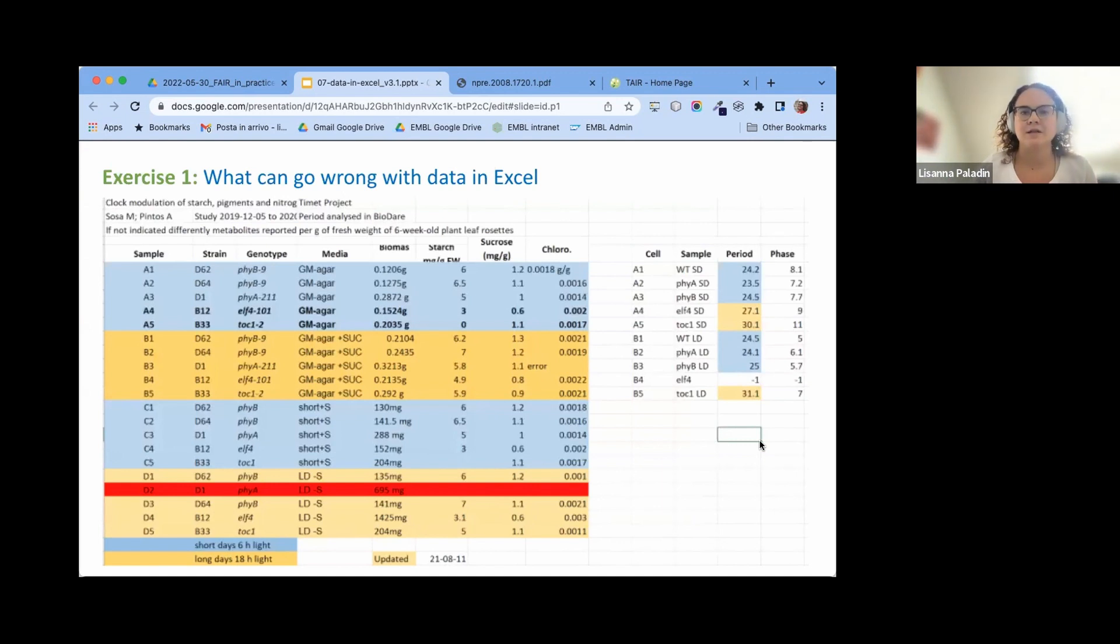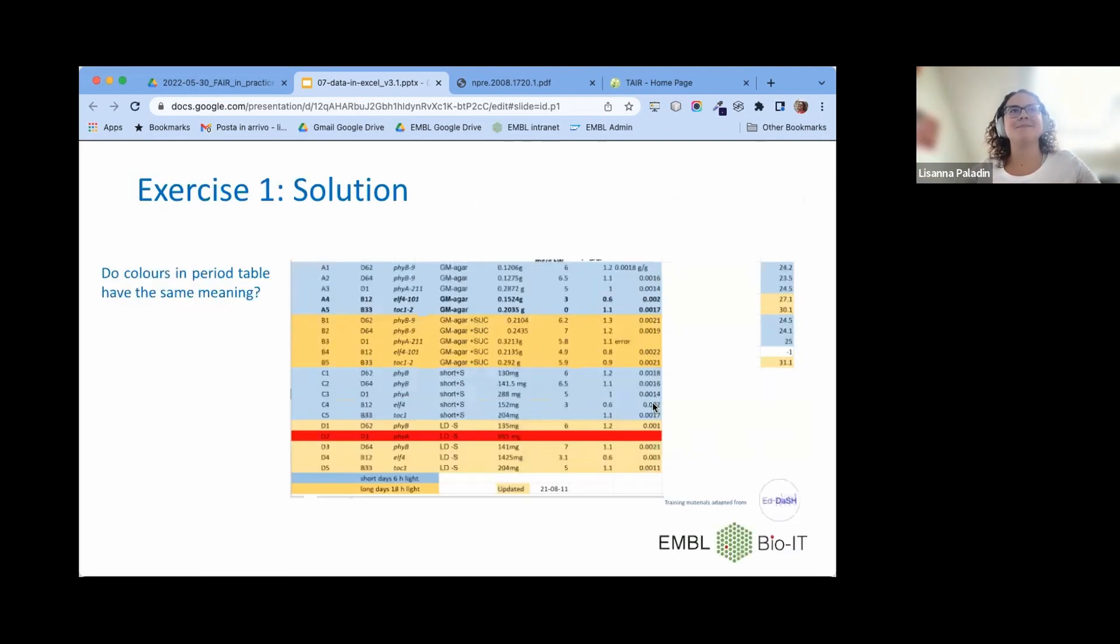So exercise one of this lesson, let me check if I can quickly copy it. I will copy the link to this table inside the shared notes. The exercise here is to find all the errors or all the things that go wrong inside this data, and we're going through the errors in this table. Let's quickly check if we mentioned everything here.